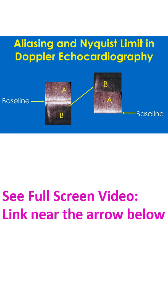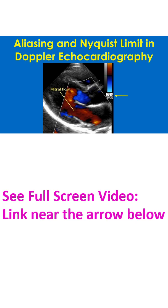Increasing the velocity setting increases the pulse repetition frequency of the HPRF. A similar phenomenon can be seen in color Doppler echocardiography as well. When the Nyquist limit is exceeded, a flow which should have been depicted as blue — that is, away from the transducer — is depicted as red, seemingly as towards the transducer. This is the first wraparound.